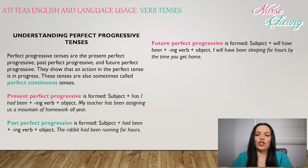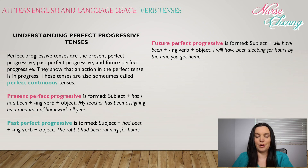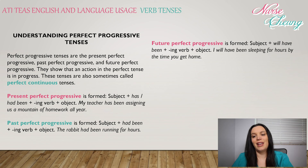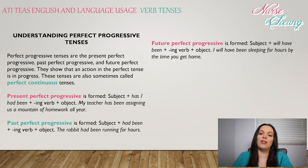Future perfect progressive is formed: subject + will have been + an -ing ending verb + object. For example: 'I will have been sleeping for hours by the time that you get home.'